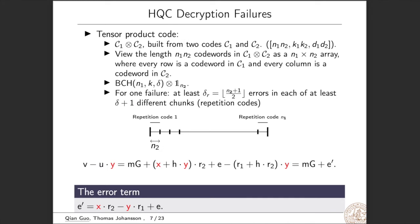As we are studying the decryption failure attacks, so we need to elaborate how the HQC decryption failures can occur. In HQC, they use a tensor product code, which means that it is a tensor of two linear codes C1 and C2. If C1 has code parameter n1, k1, d1 here, n1 is the code length, k is the code dimension and d is minimal distance. And C2 has a parameter n2, k2, d2. So tensor product code is of parameters n1 times n2, k1 times k2 and d1 times d2.